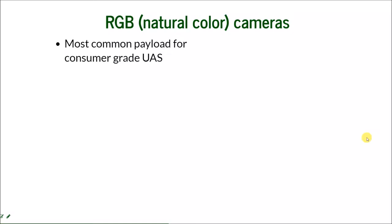UIS is the most common payload for consumer-grade UIS. It can operate in photo or video mode, but we are more interested in photo mode. Video mode is a fun feature — a lot of people buy drones to take video of their travels or fly over their property. But we want to process the data. Video usually has lower resolution, or if you invest in high resolution, it takes a lot of space. We need frames from video anyway.